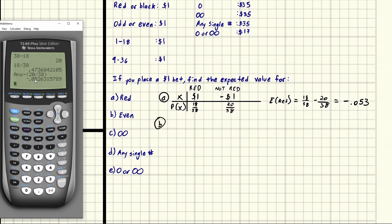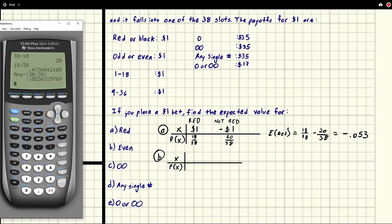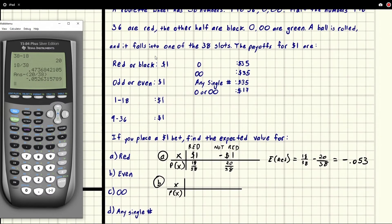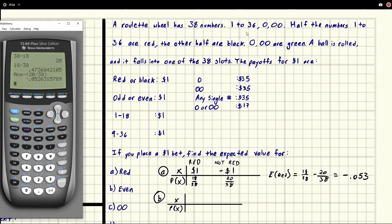Let's go ahead, let's do B. We'll follow the same pattern. So we'll make ourselves a chart. We've got X, probability of X. And this one says even. So we look up, it says odd or even. So either one of these, the payoff is a dollar. So we say, okay, well how many numbers are there? Let's look at this. There's two numbers here that are a bit suspicious: zero and double zero. Zero is neither odd or even. It's neither one.